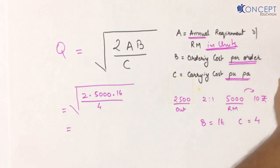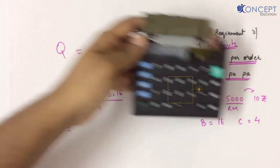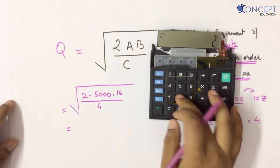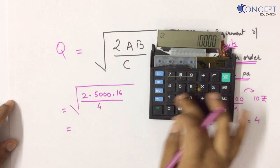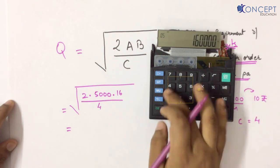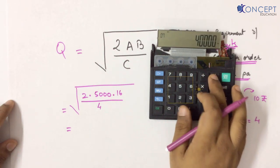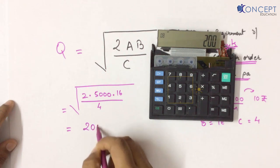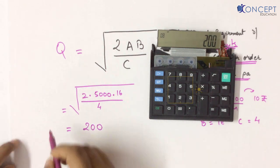When I perform this calculation, let's see what happens. 2 into 5000 into 16 divided by 4 equals root of 40,000, which is 200. So the magic quantity is 200.